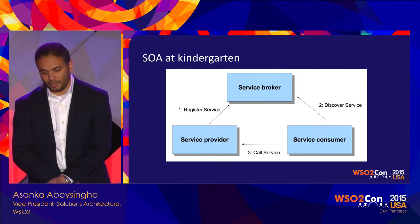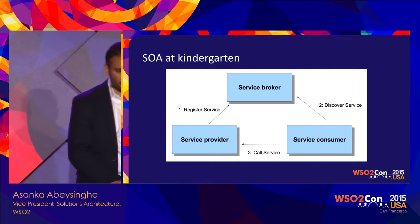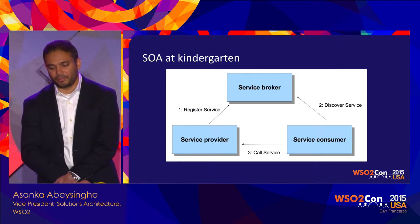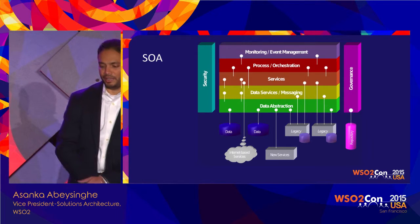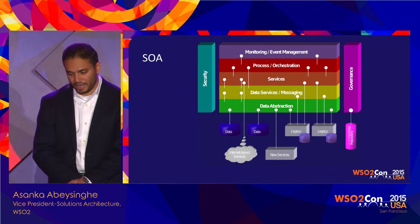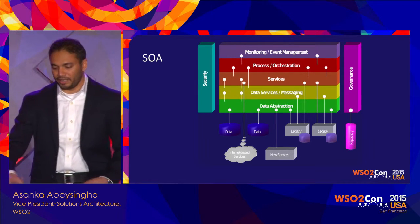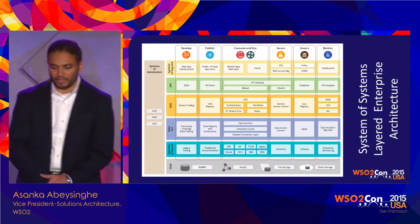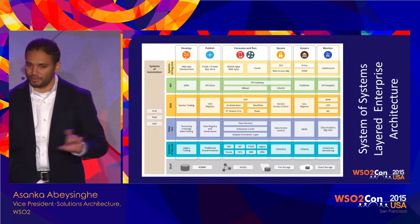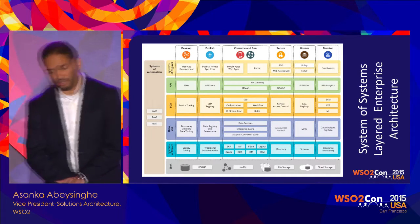SOA started with three components: a service provider, a service broker that advertises the service, and a service consumer. That worked early on but wasn't enough. Today, SOA has different architecture layers and represents only one layer of a complete enterprise architecture — sitting between the data virtualization layer and the API layer.